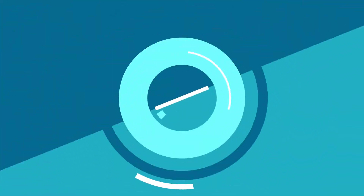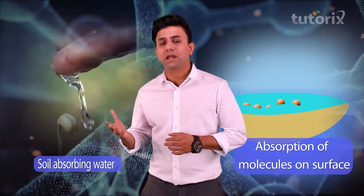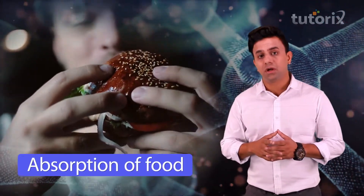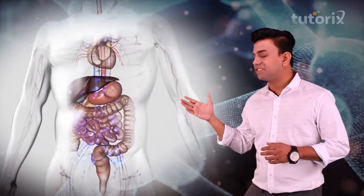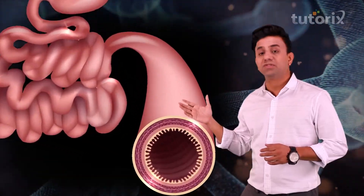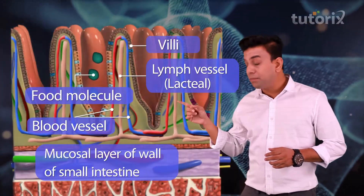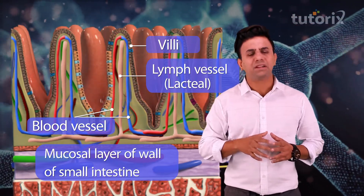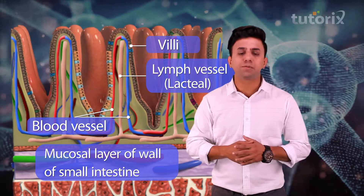So in this video, we shall talk about absorption and see the entire details of it. Let us first understand the concept of absorption in the context of digestion of food. Absorption is the process by which the end molecules of food digestion are passed from the intestinal mucosa into blood or lymph, and this is what we mean by absorption of food.